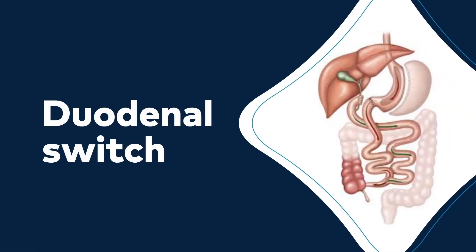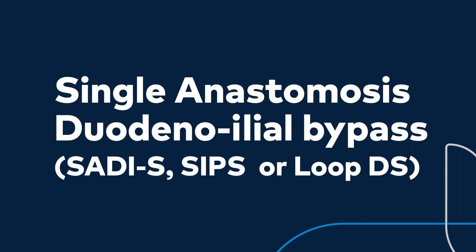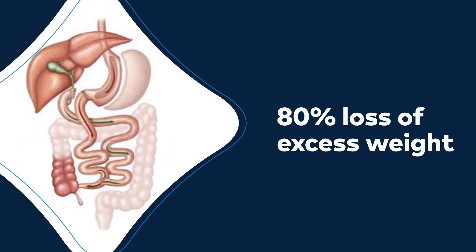Another option is called a duodenal switch. This procedure combines a gastrectomy, the removal of part of the stomach, with an intestinal bypass, which makes the path your food takes through your intestines shorter. This reduces the size of the stomach as well as how much nutrition your small intestine can absorb from your food. There is also a new procedure called the single anastomosis duodenal-ileal bypass, or SADIS, also referred to as SIPS or LOOP-DS. This procedure is highly effective for type 2 diabetes treatment, but since it is new, it is not performed by all surgeons. With these duodenal switch procedures, patients typically experience an 80% reduction in their excess weight.